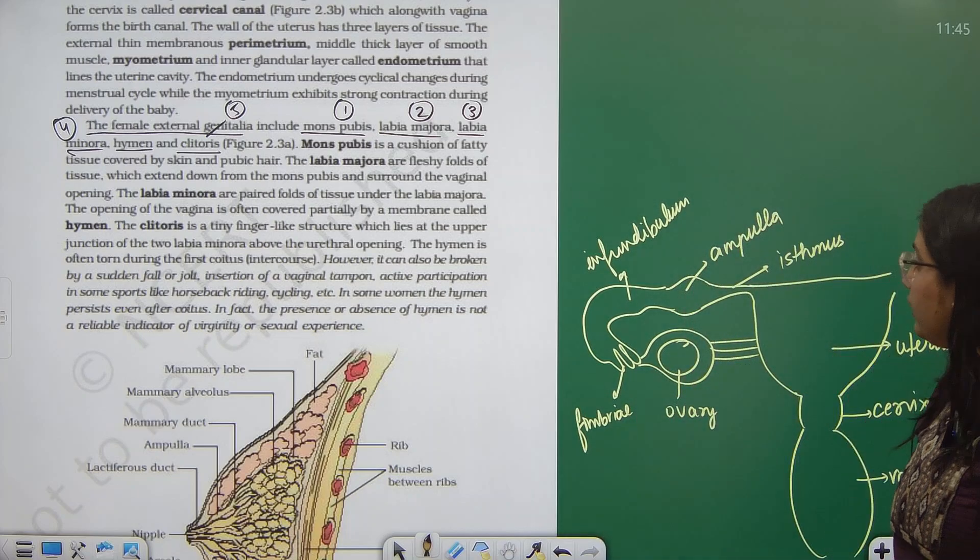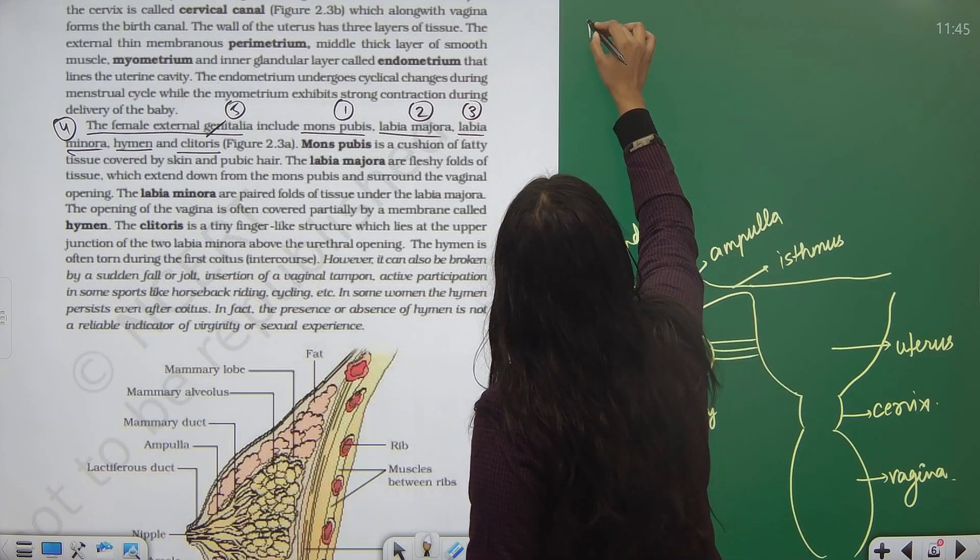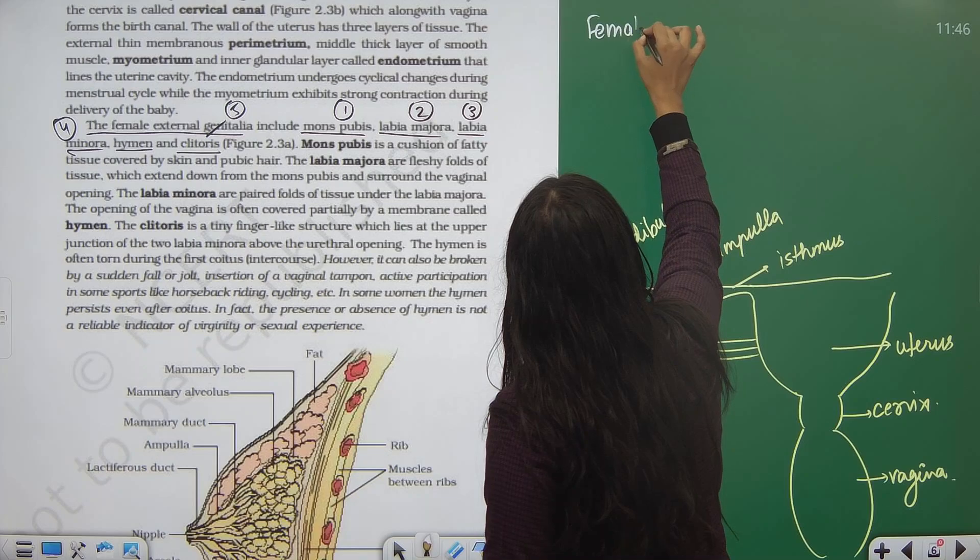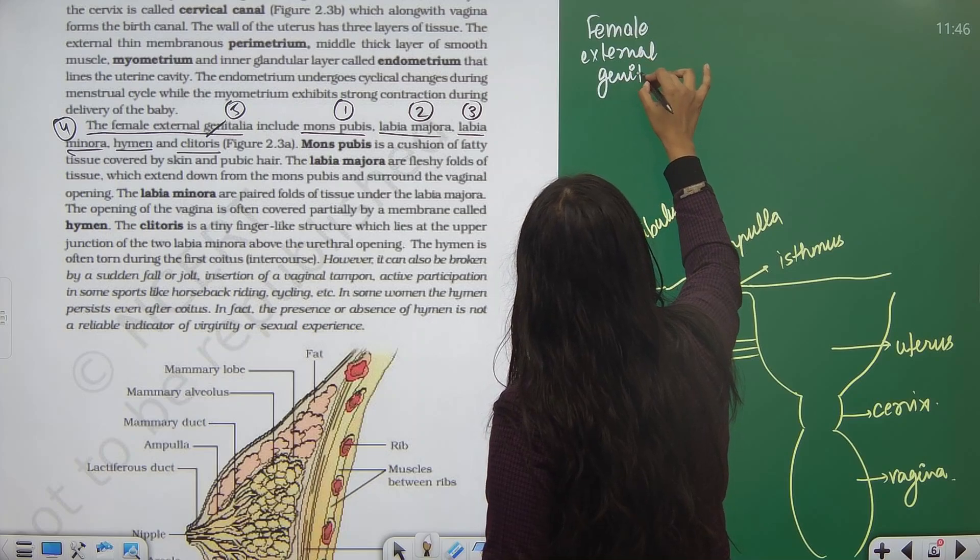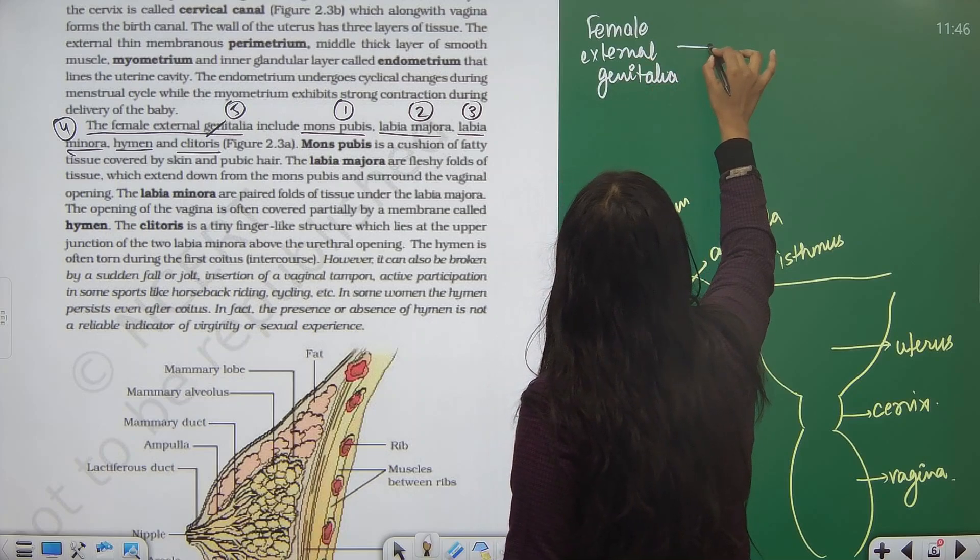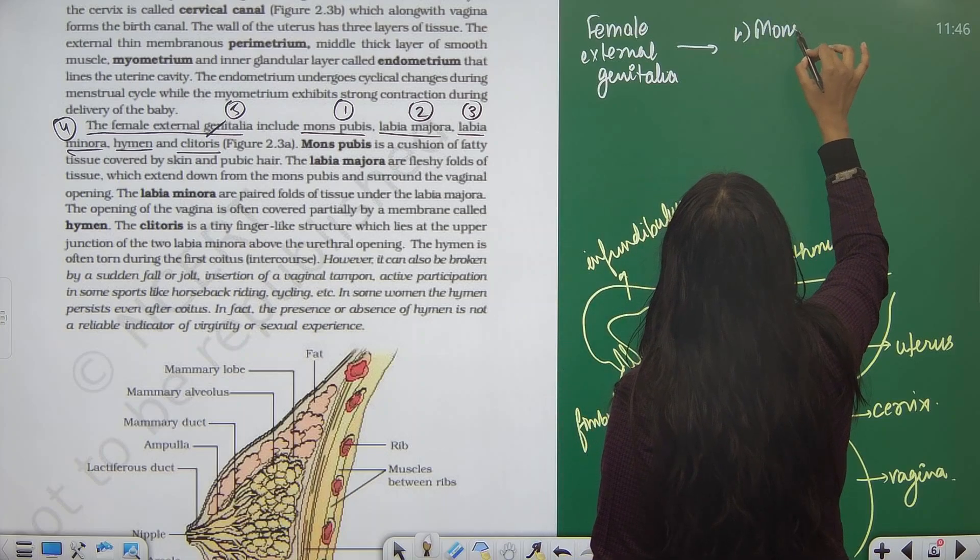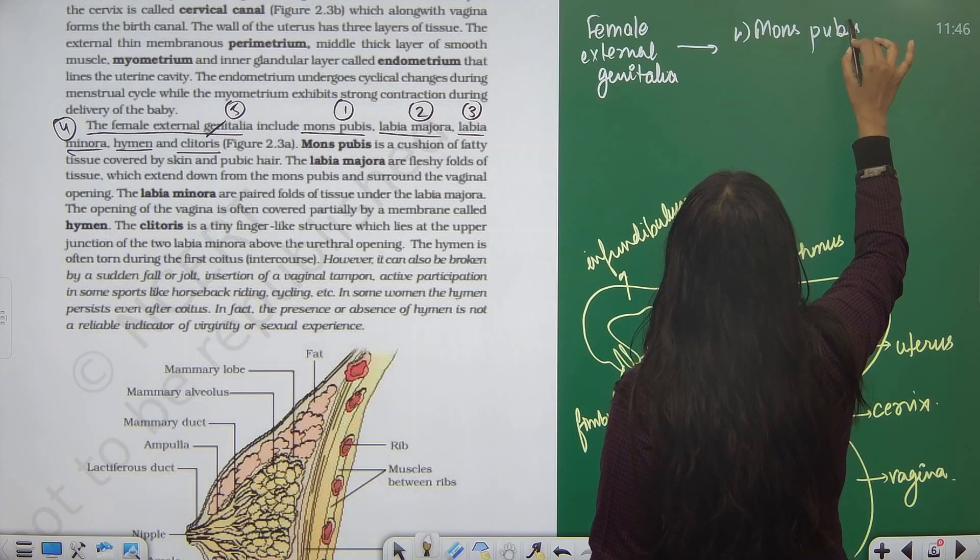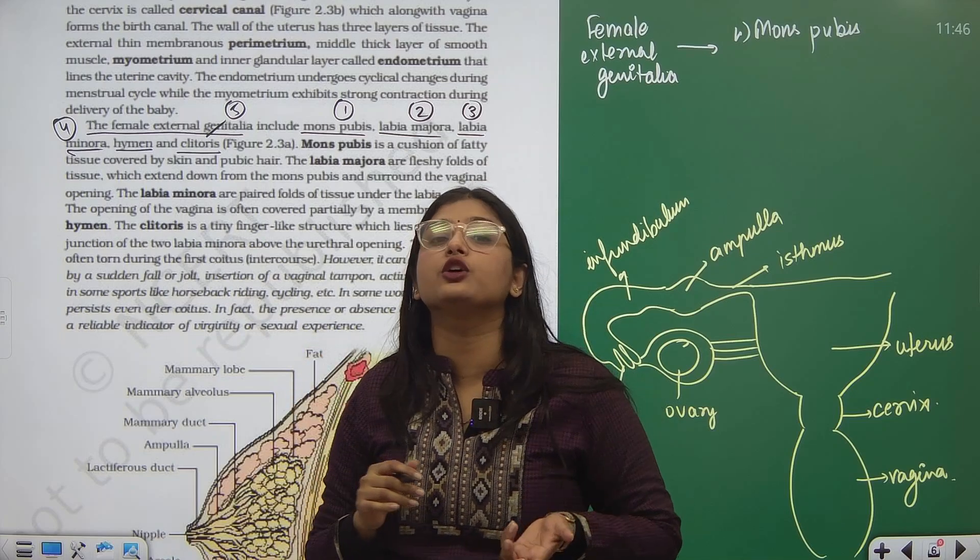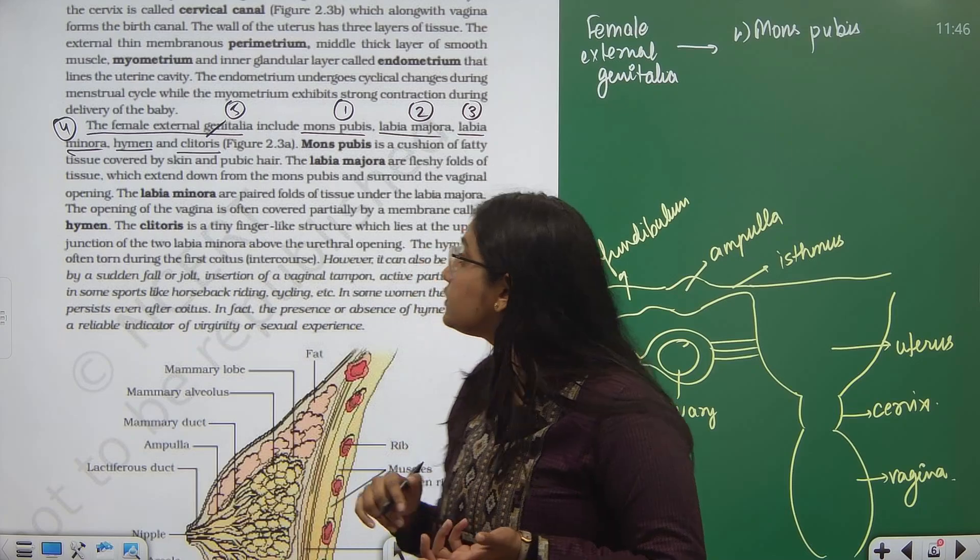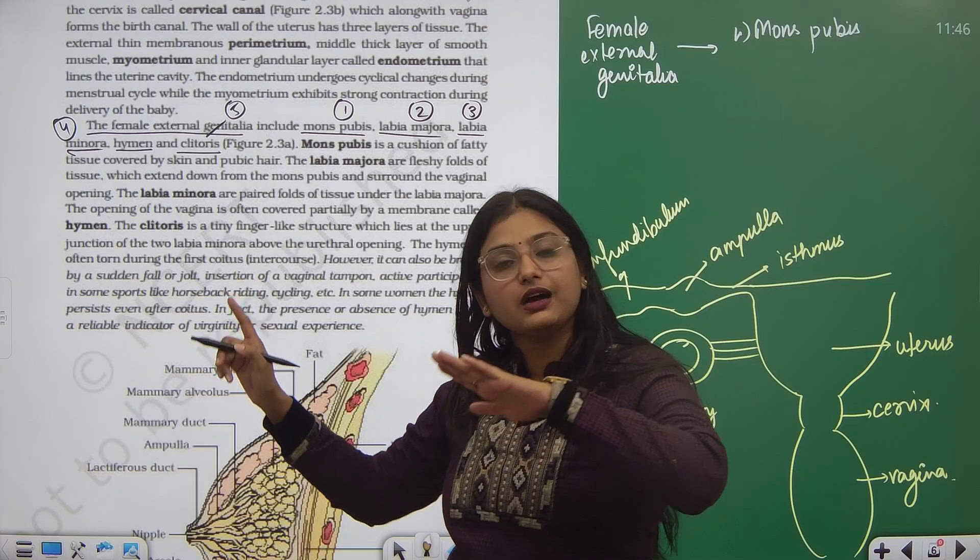You need to first learn the basic parts which are comprised in the female external genitalia. First, mons pubis. Now what is this mons pubis? This mons pubis is basically a cushiony structure on which you see the hair growth occurring.